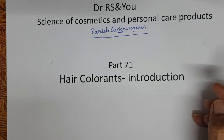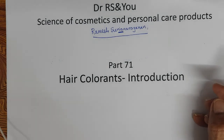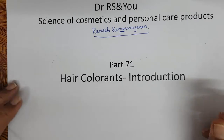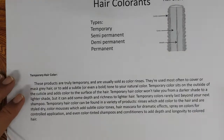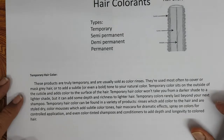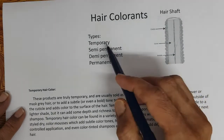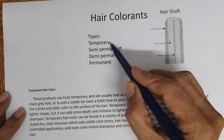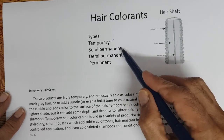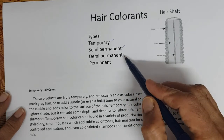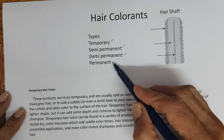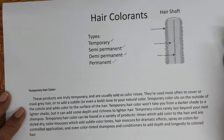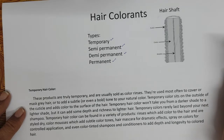I want to cover hair colorants in three parts. The first part will be just an introduction about hair colorants — what are the types. We have temporary, semi-permanent, demi-permanent, and permanent. We will just discuss about the classification of hair colors very briefly.